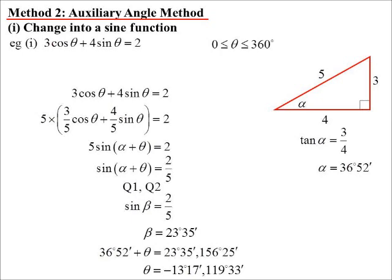That's got a problem though. Notice the first answer is minus 13 degrees 17 minutes. We said we're looking for answers between 0 and 360. So I've got to turn that angle into an angle between 0 and 360. How do I do that? I just simply add 360 to it. So my actual answers will be 119 degrees 33 minutes and 346 degrees 43 minutes. Same as we got before.